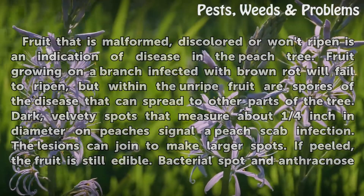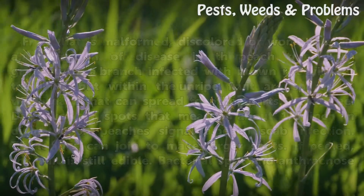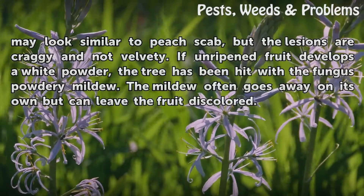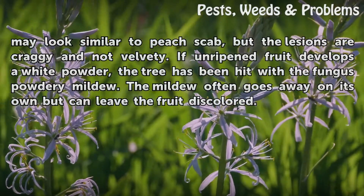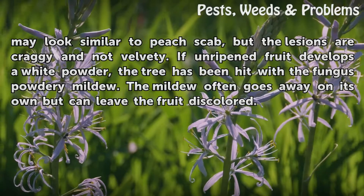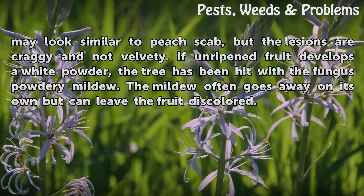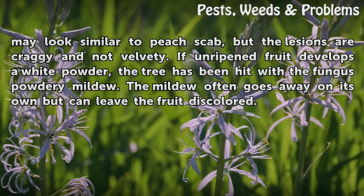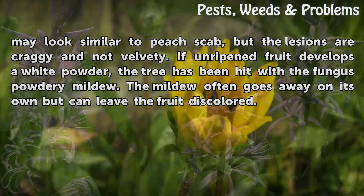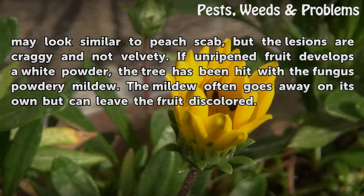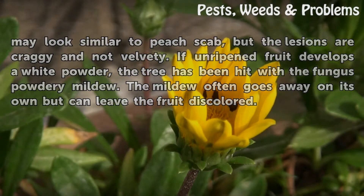If peeled, the fruit is still edible. Bacterial spot and anthracnose may look similar to peach scab, but the lesions are craggy and not velvety. If unripened fruit develops a white powder, the tree has been hit with the fungus powdery mildew. The mildew often goes away on its own but can leave the fruit discolored.